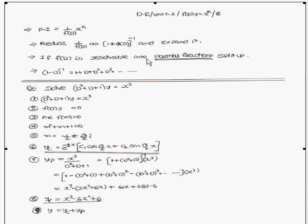If f(D) is reducible into partial fractions, split it up. If you can apply the formula (1 − D)^(-1), write the formula and do the simplification. The right-hand side should be x^k or a polynomial of x.